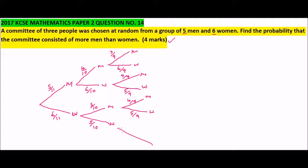For the last branch, we can choose a man or a woman. The probability of choosing a man is 5/9. We have chosen 2 women, so we are remaining with 4, so the probability of choosing a woman is 4/9. That completes the tree diagram.